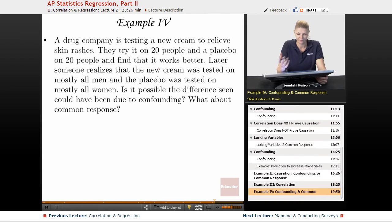They try it on 20 people and a placebo on 20 people and find that it works better. Okay, so they got this new drug, very excited. Later, someone realizes that the new cream was tested on mostly all men, and the placebo was tested on mostly all women. Is it possible the difference seen could have been due to confounding? What about common response?